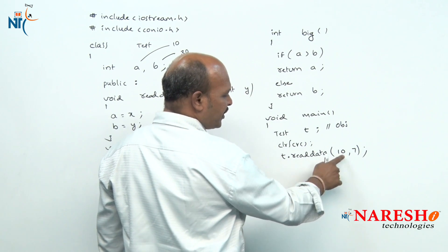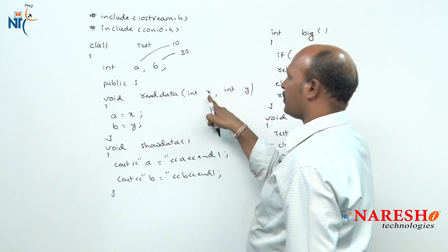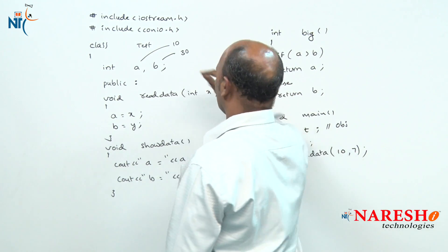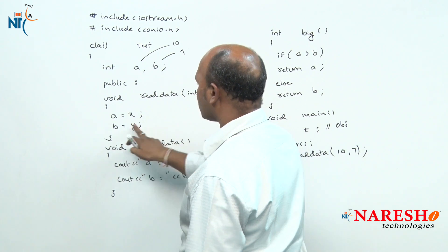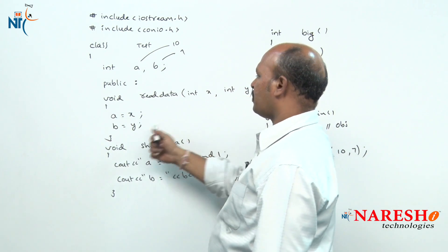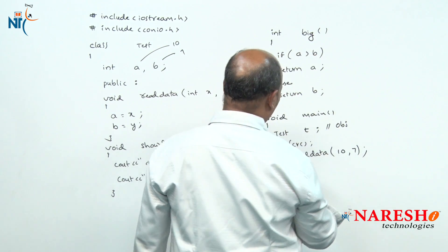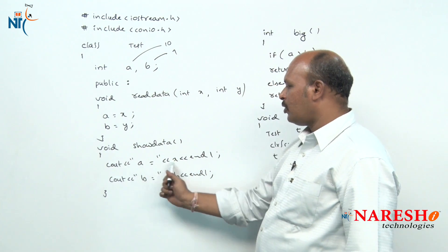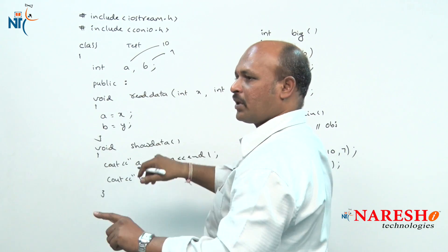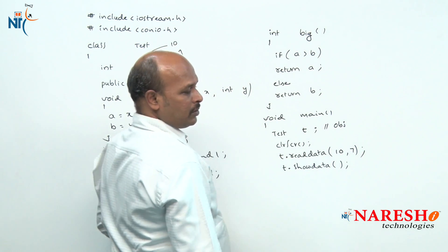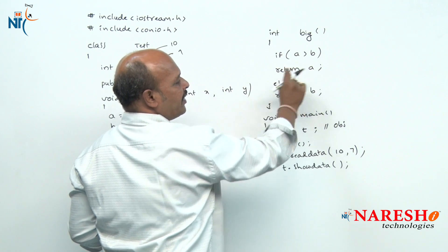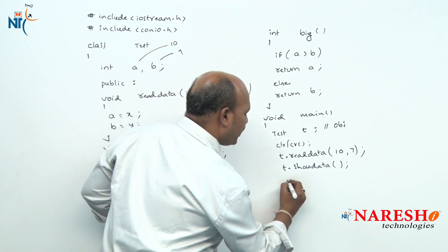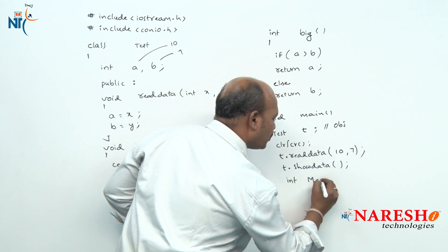When read_data is called, 10 and 7 are carried in and received by formal parameters x and y. So x becomes 10 and y becomes 7. Those values are assigned to a and b, so a becomes 10 and b becomes 7. Then we call t.show_data, which prints a = 10 and b = 7. Next we need to find the biggest value using the big function, which returns an integer, so we store it in a variable — int max = t.big().